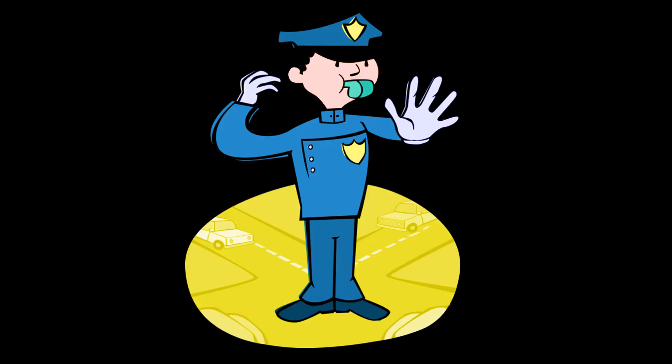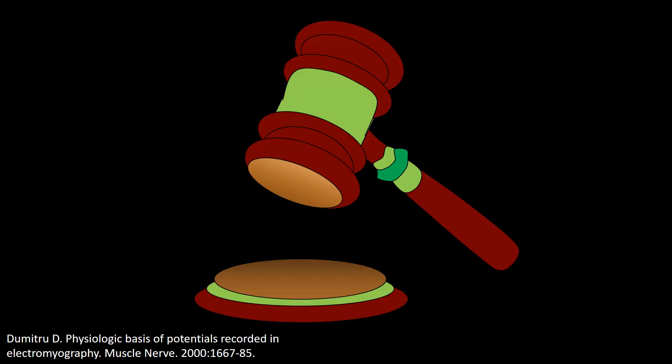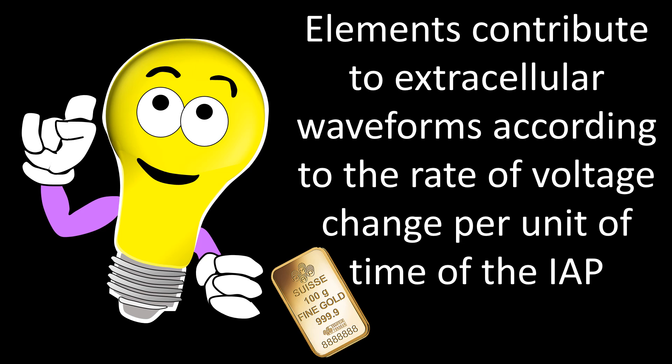To direct us in the process of answering this question, let's start by looking at some facts and a few rules. We will start with a rule that applies to all situations when dealing with extracellular expression of intracellular action potentials in muscle fibers — the golden rule. This rule states that intracellular elements contribute to extracellular recorded waveforms in direct proportion to the rate of voltage change per unit of time of the intracellular action potential. Elements dominated by quick voltage changes contribute exponentially, whereas those with very slow changes do not contribute to extracellular wave formation.